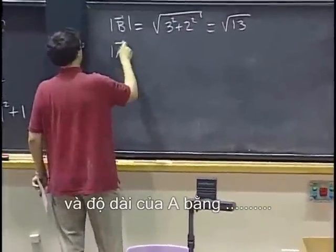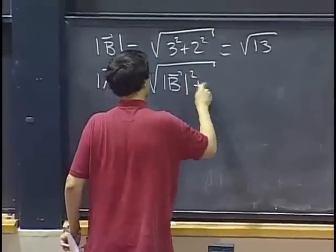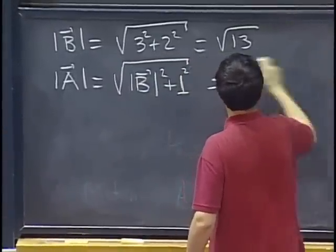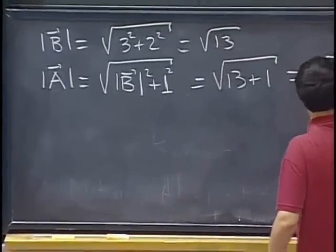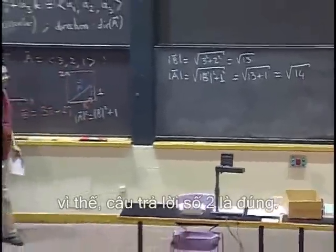And length of A is square root of length B squared plus 1, squared if you want, which is going to be square root of 13 plus 1 is square root of 14. Hence, answer number two, which almost all of you gave.